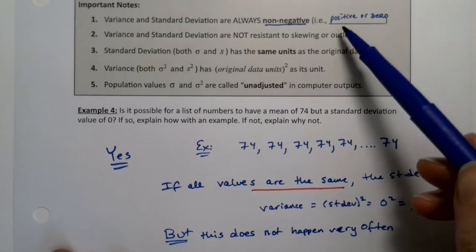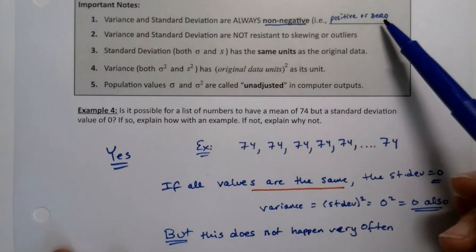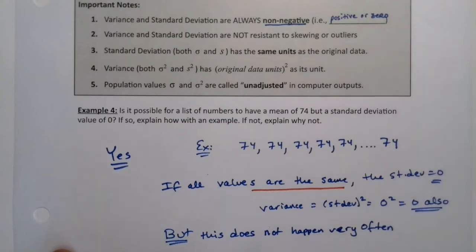So by non-negative, what they mean is positive, maybe zero, but it'd be very, very unlikely for it to be zero, right? This does not happen very frequently.